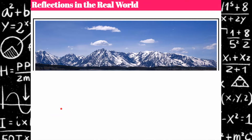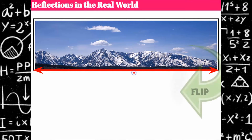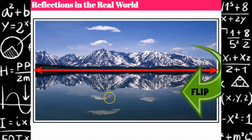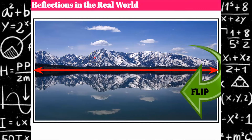Let's talk about reflections in our real world. You see these when you're out in nature. Imagine a mountainscape — the waterline is the line of reflection. The mirror image has been flipped over this line into the water. The reflection is the same size as the original; it's not distorted. It's been flipped, showing its reflection in the water.